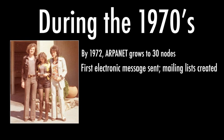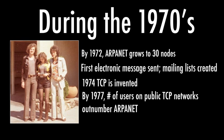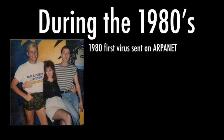In 1974, TCP — Transmission Control Protocol — was introduced. A protocol is a set of instructions that allows different systems to talk to each other. TCP was the predecessor to what we use today on the internet — a standardization of communication between multiple computers. By 1977, the number of users on public TCP networks actually outnumbered ARPANET. Then in the 80s, the first virus was sent on ARPANET and brought it to its knees.